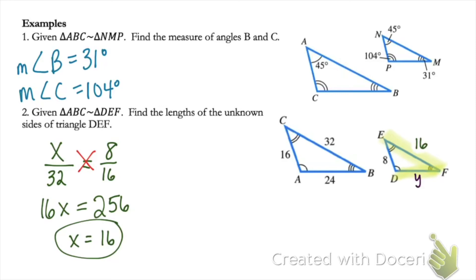Next, let's solve for side DF. I'm going to call that Y. So we're going to set up a proportion. DF is proportional to side AB of the other triangle. So I get Y over 24. And then we can use 8 over 16 again. Set those equal and solve the proportion. For our final answer, we get Y equals 12.